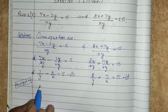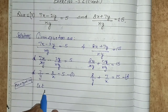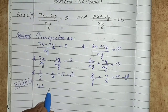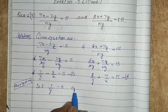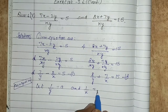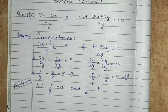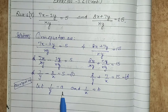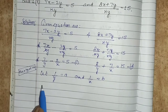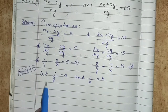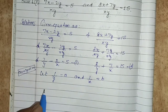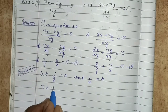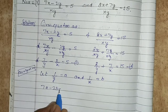We can see that 1 upon y is common and 1 upon x is common. So let us assume 1 upon y equals to a and 1 upon x equals to b. The first equation will transform: 7 times 1 upon y minus 2 times 1 upon x, that is 7a minus 2b equals to 5. This is equation number 3.